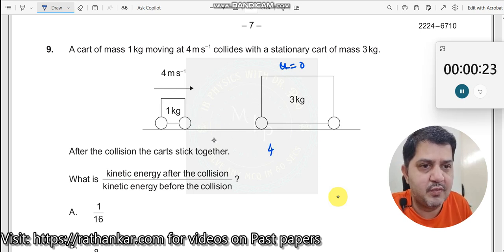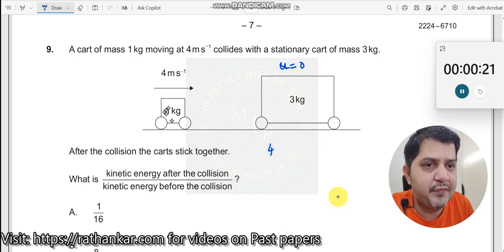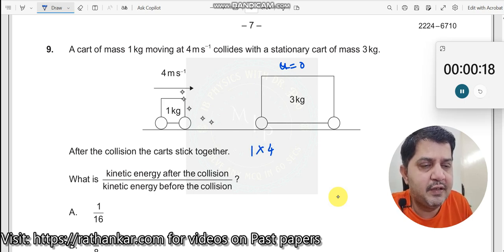Before collision, what is the momentum? The first one is mass times velocity: 1 × 4. Plus the second cart: 3 × 0, which equals zero. This should now be equal to...